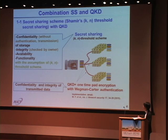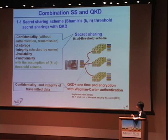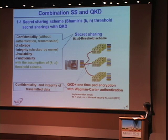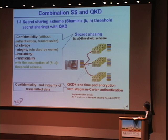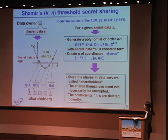Shamir's K-N threshold scheme can realize the information theoretically secure storage system if the data transfer and authentication can be done in an information theoretically secure way. Moreover, the secret sharing scheme has these functions, and confidentiality and integrity of transmitted data can be guaranteed by QKD and one-time pad encryption. Therefore, the combination of secret sharing and QKD is a natural expansion.